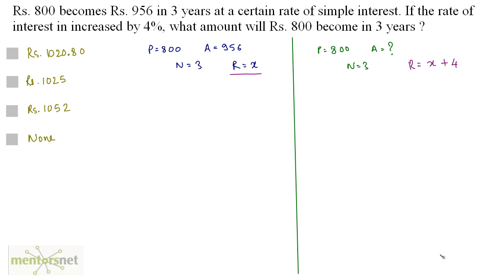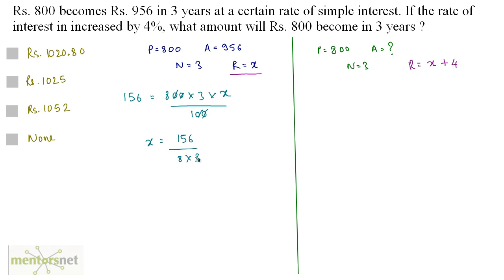Let's concentrate on the left hand side case to calculate the rate of interest. Simple interest equals amount minus principal, so 956 minus 800 is 156. This equals PNR upon 100, that's 800 times 3 times X upon 100. The zeros get cancelled out, so X equals 156 divided by 8 times 3, which gives 52 by 8, and that is 6.5 percent.